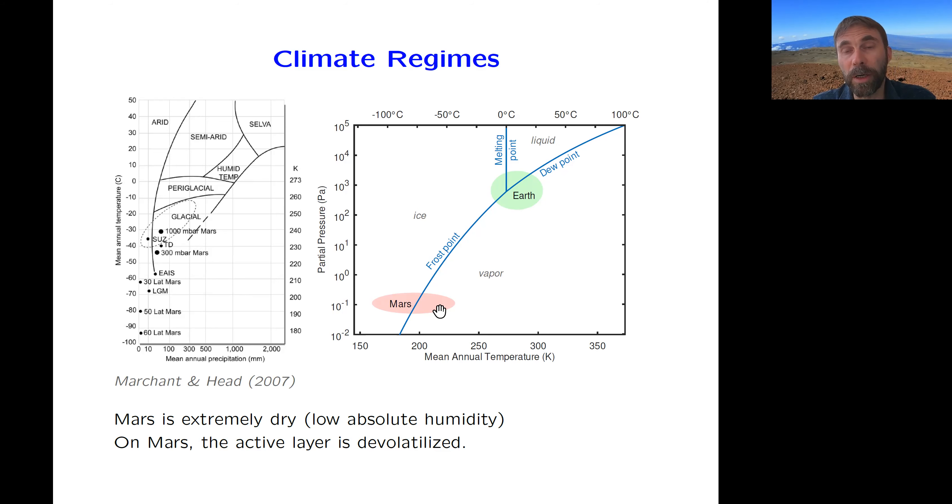But on Mars, we are far away from the triple point. And one of the consequences of Mars being so extremely dry is that the active layer is devolatilized, is extremely dry. So if you were at zero Celsius and 0.1 pascal, we are far away from ice, we are far away from the liquid phase. So if these phases do exist, they disappear quickly. And so many of the processes which go on in an active layer on Earth do not happen on Mars.